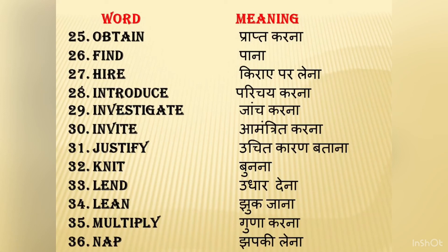Knit means bunna — she was knitting. Lend means udhar dena — he has lent me 5000 rupees. Lean means jhuk jana — to lean or bend. Multiply means guna karna — to multiply. Nap means jhapki lena — a short sleep. He was napping in the class. Let's review: obtain means prapt karna, find means pana, hire means kiraye par lena, introduce means parichay karana, investigate means janch karna, invite means amantrit karna, justify means uchit karan batana, knit means bunna, lend means udhar dena, multiply means guna karna, nap means jhapki lena.